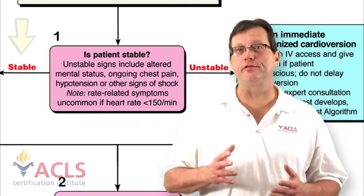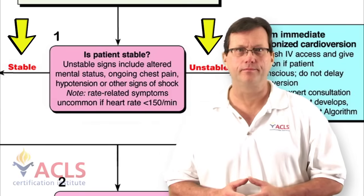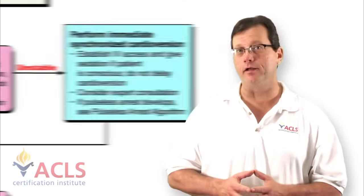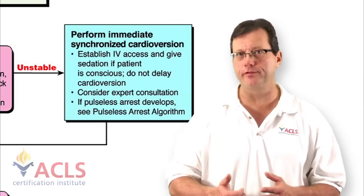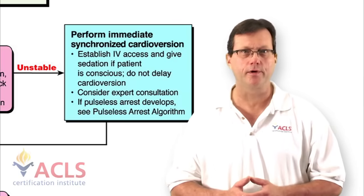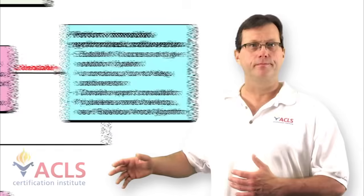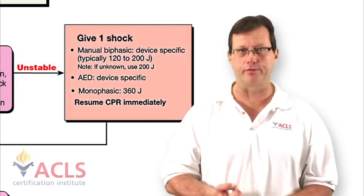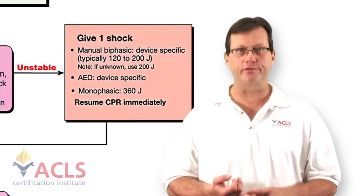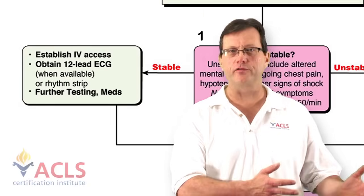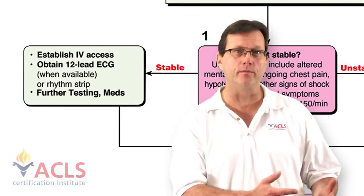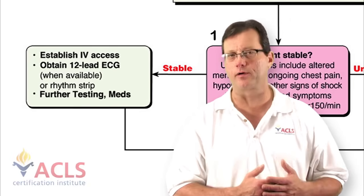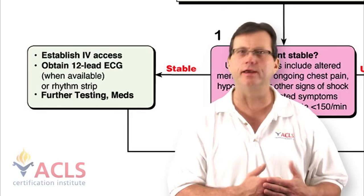So first, is the patient stable or unstable? That's going to guide your therapy. Unstable patients showing serious signs of shock and hypotension — we go to electrical therapy. They're either going to need synchronized cardioversion or defibrillation depending on the rhythm. If the patient's stable, we have some more time, some wiggle room. We can get a 12-lead EKG and do further investigation to determine what the underlying rhythm really is.